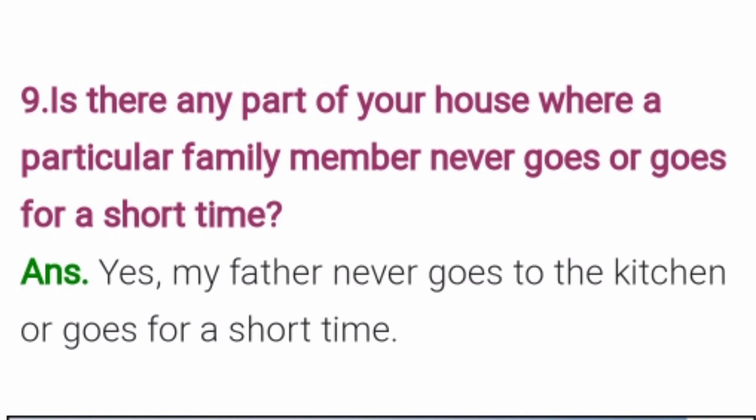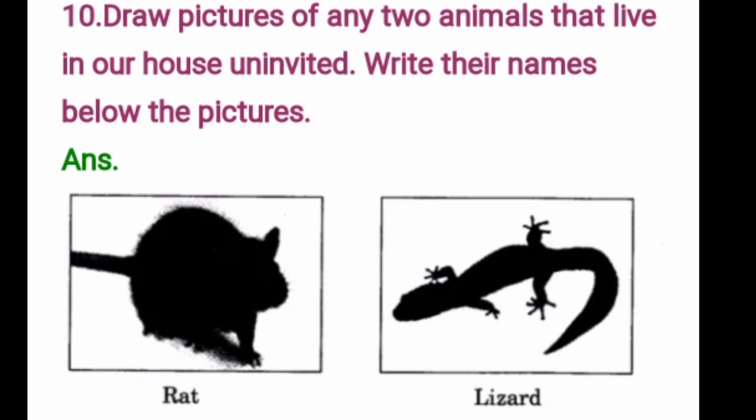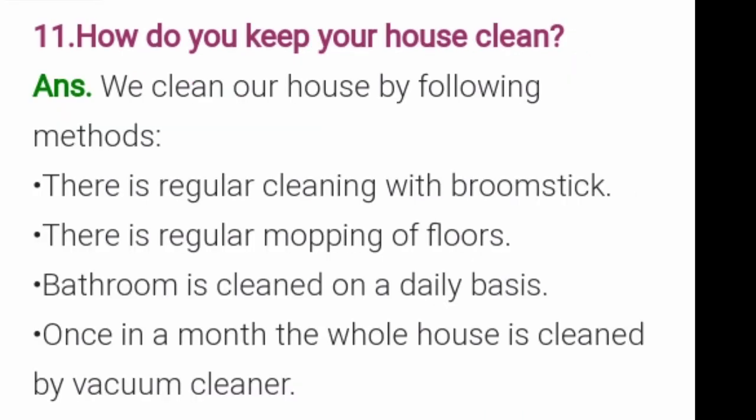Question 10: Draw pictures of any two animals that live in our house uninvited, and write their names below the pictures. Uninvited animals may be a rat or a lizard. The next question depends on your cleanliness: How do you keep your house clean? We clean our house by the following methods: regular cleaning with a broomstick, regular mopping of floors, bathroom cleaned on a daily basis, and once a month the whole house is cleaned by a vacuum cleaner.